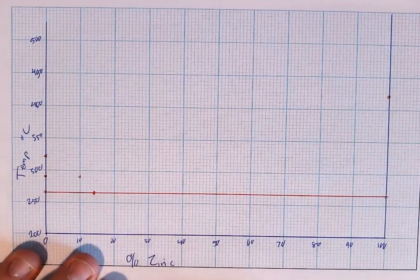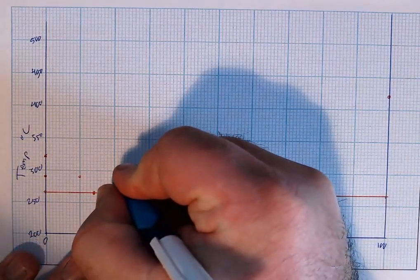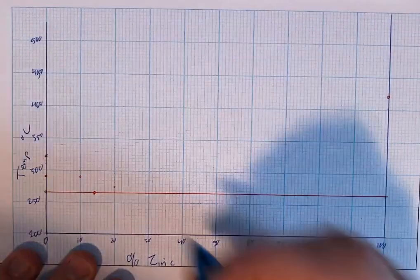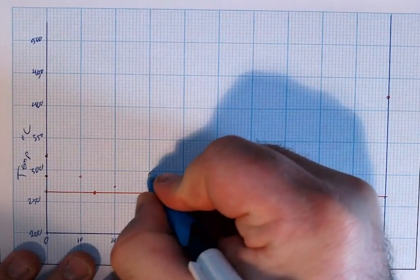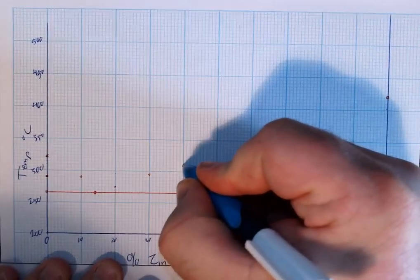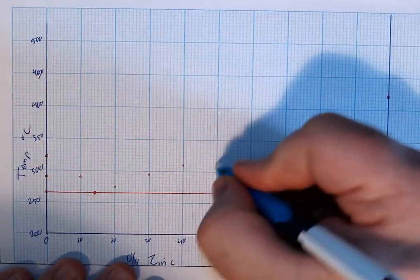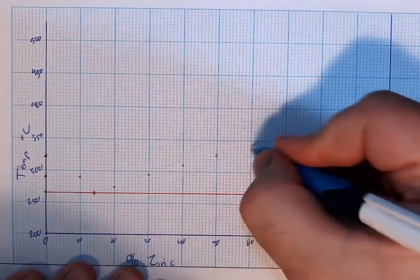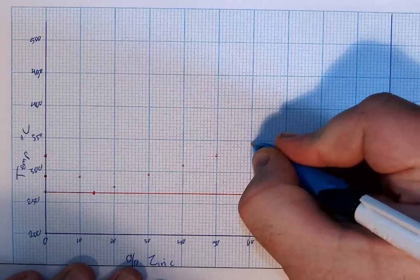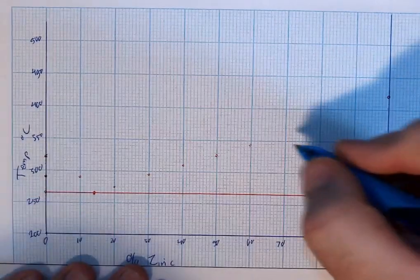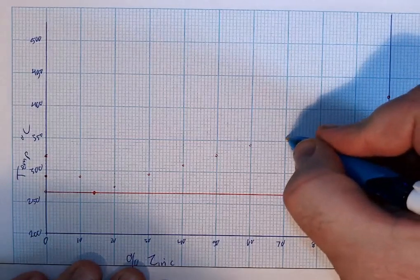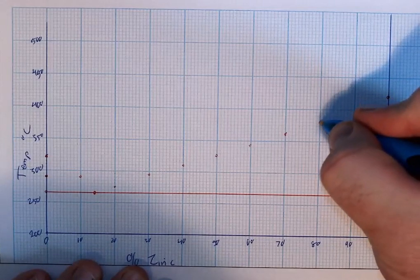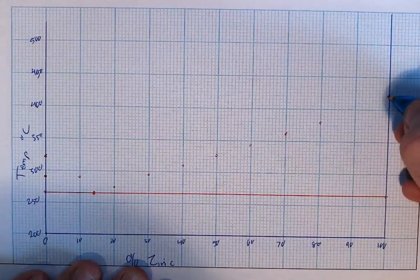Now we're going back to 20 percent at 275, then 293, 310 at 40 percent, 328 at 50 percent, 345 at 60 percent, 362 at 70 percent, 380 at 80 percent.